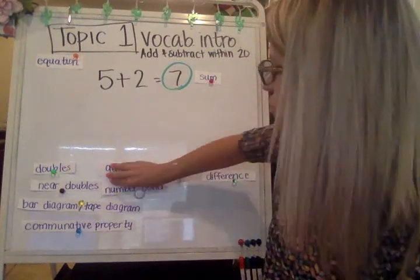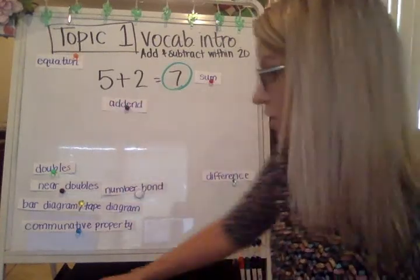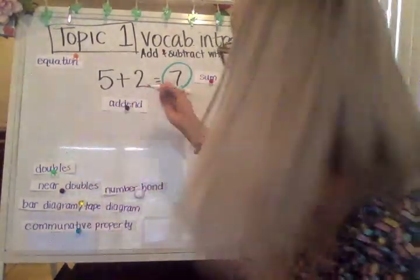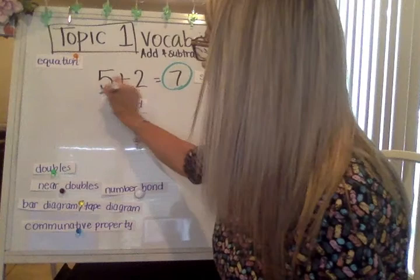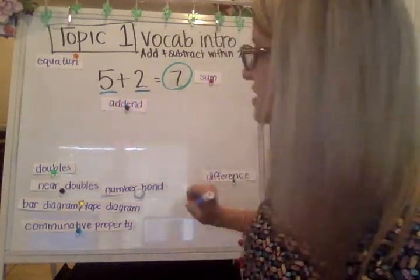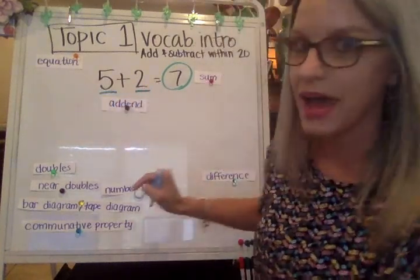These numbers — five and two — are called addends. So the numbers that are added: five is an addend, and two is an addend.